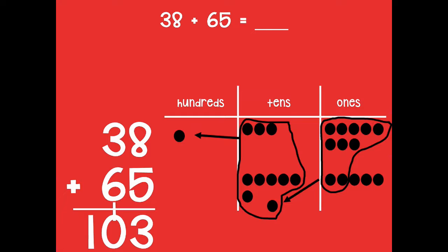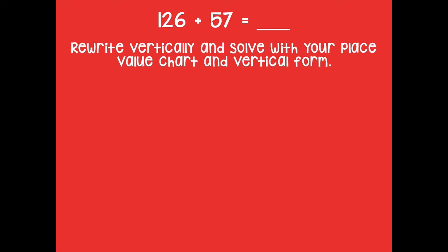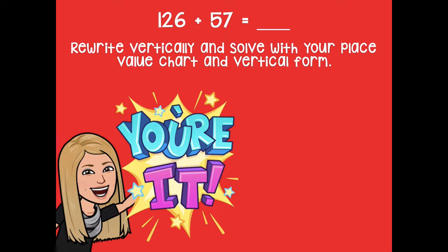Great! If you didn't get it, that's okay — we're going to practice with another one. Here's the next problem: 126 plus 57. Do the same thing: rewrite it vertically and solve with your place value chart and in vertical form. Pause the video, solve the problem, and click play when you're ready.